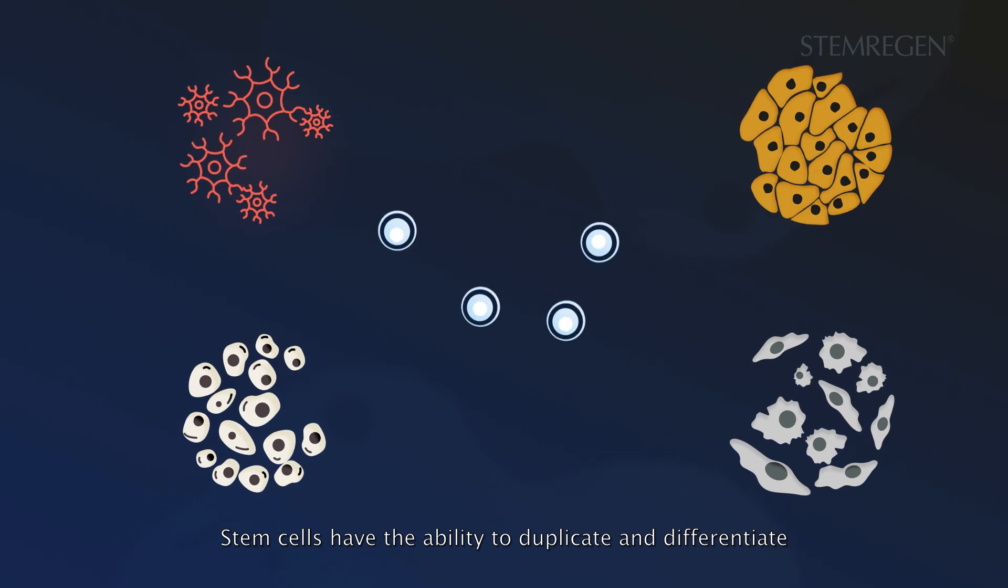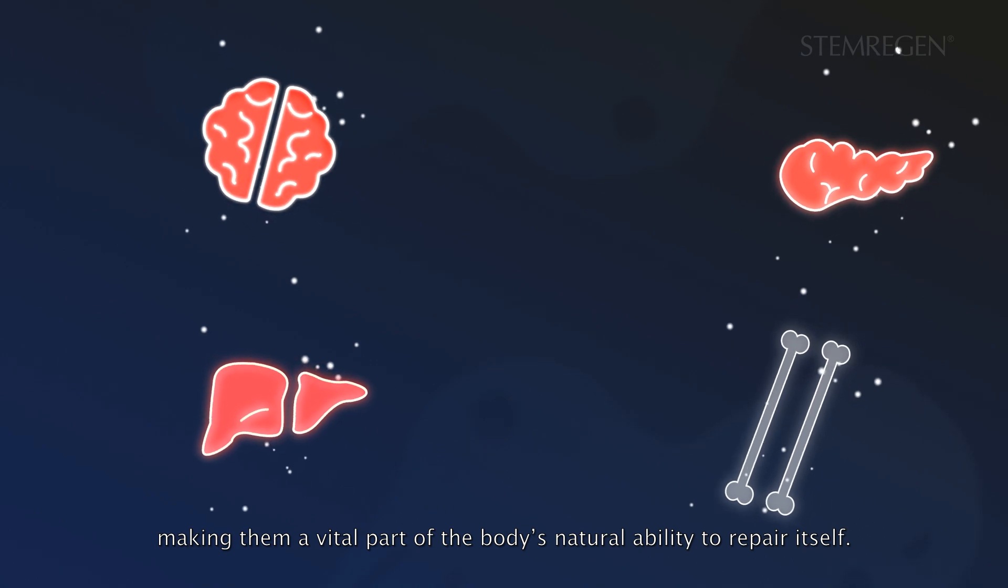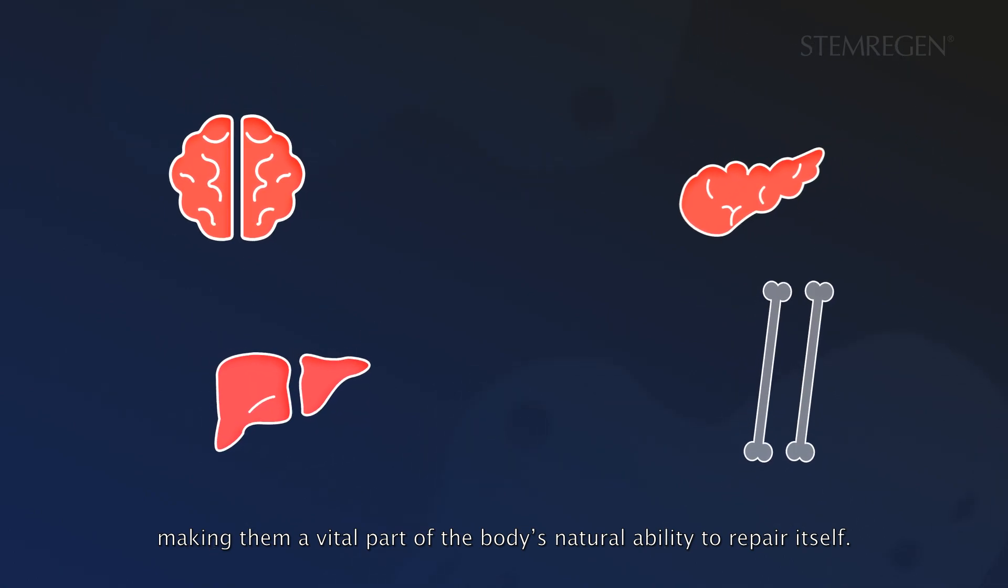Stem cells have the ability to duplicate and differentiate into almost any type of cell in the body, making them a vital part of the body's natural ability to repair itself.